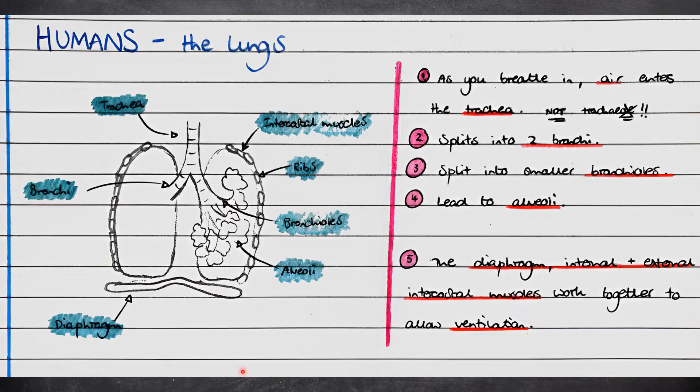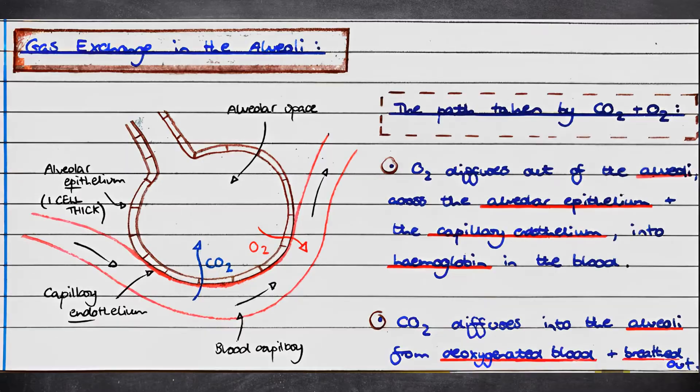So you need to know this diagram. As you breathe in, air enters the trachea. Be careful not to confuse this with the tracheae which are found in the insect gas exchange system. The trachea then branches off into two bronchi, which lead to bronchioles, which lead to the alveoli. The diaphragm, internal and external intercostal muscles all work together to allow ventilation.